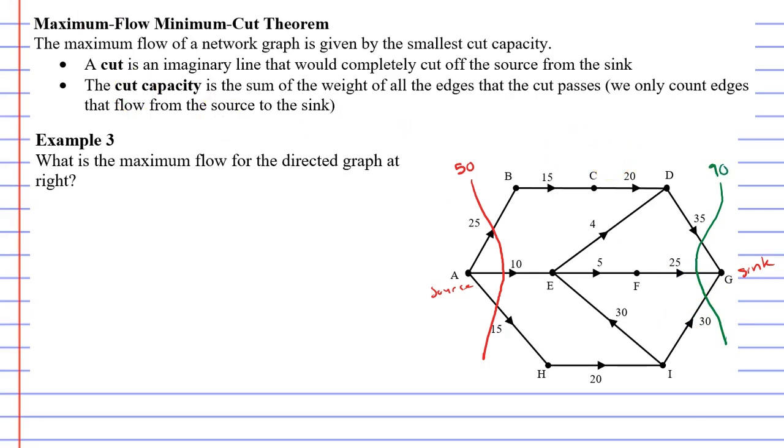So we're looking for the smallest cut capacity. So far, our red line, our red cut here, is the best one. So how are we going to figure out where the best cut is, the cut with the smallest cut capacity?